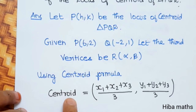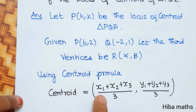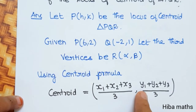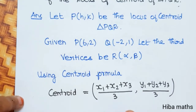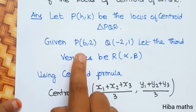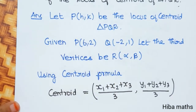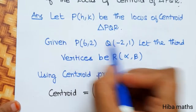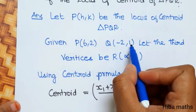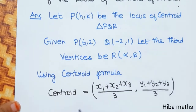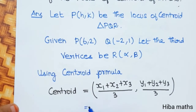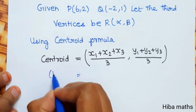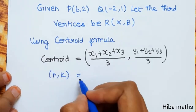Using the centroid formula, the centroid is equal to (x₁ + x₂ + x₃)/3 and (y₁ + y₂ + y₃)/3. For triangle PQR, we label P as (x₁, y₁), Q as (x₂, y₂), and R as (x₃, y₃), and substitute to get the centroid (H, K).